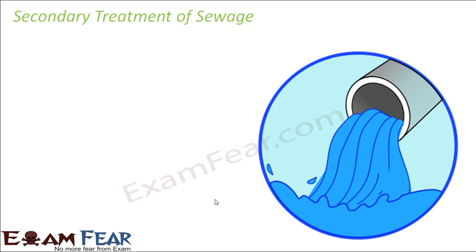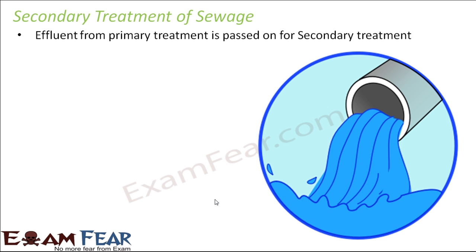This was the primary treatment. Now let's come to the secondary treatment, which starts after primary treatment. You have already separated the solid particles. Now out of the remaining liquid sewage, you need to remove the harmful substances — this is the most challenging task. The effluent from primary treatment is passed on for secondary treatment. In sedimentation, the solvent which remains above is called effluent. This effluent will now move for secondary treatment, where there is constant agitation — the effluent is moved and mixed continuously.